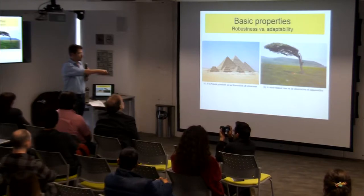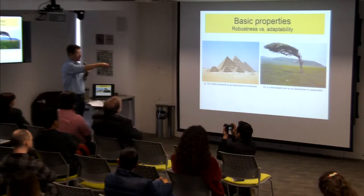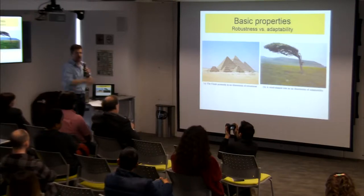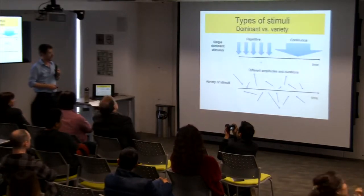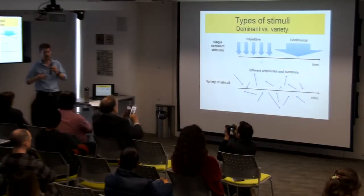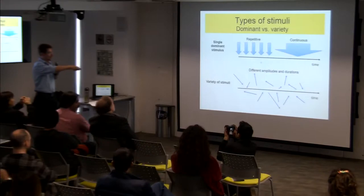Another key aspect is adaptability. If you have a stimulus which is very strong, perhaps the best way to deal with it is not to resist, but to adapt — as trees do when there is a dominant wind. I would like to focus on two aspects: how the human body responds to a single dominant stimulus, and to a variety of stimuli with different amplitudes and durations.